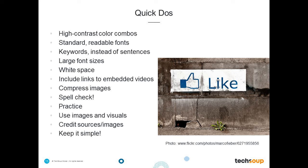Spell check is very important for maintaining credibility. Practice before your presentation to test timing and how things feel in real time, especially if you're showing something live on screen. Use images and visuals to keep it interesting. Credit your sources and images — throughout this webinar you'll see little links to photos sourced from Flickr's Creative Commons. Be respectful of other people's property and use Creative Commons images when possible. If an image is all rights reserved, ask for permission first or pay for it if required.